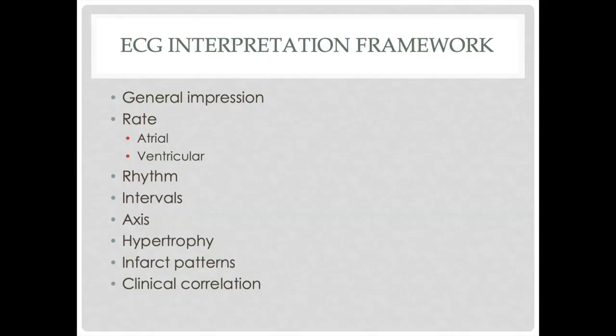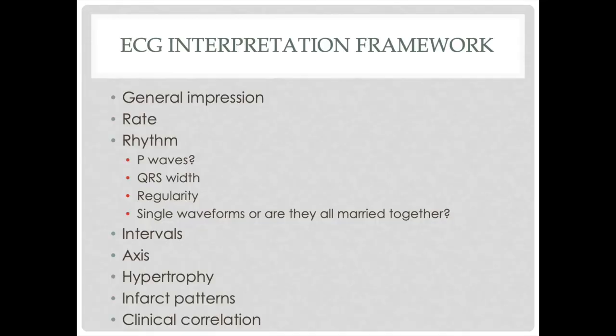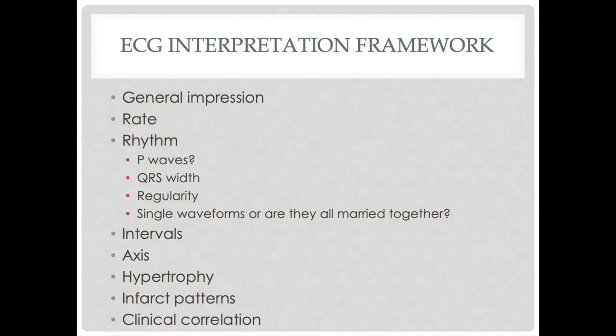Next, rate. There's a whole bunch of ways to look at the rate, but the easiest way is the number at the top left of the monitor. It's also at the top of most printed 12-leads. Rhythm — there are four rhythm questions. What I'm looking for is the name of the rhythm: the basic EMT-level name, like sinus, A-fib, stuff like that. The way I teach that is: Are there P waves? Is the QRS wide or narrow? Is it regular or irregular? And are there single waveforms, or is everything married together? Based on those four questions, we should get a good guess as to whether we're dealing with sinus, A-fib, V-tach, or whatever it is.